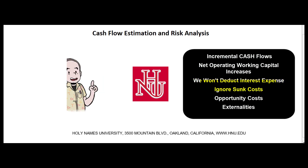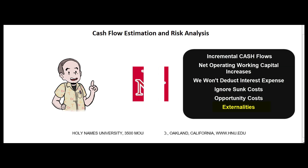We're going to ignore sunk costs — money that's been spent can't be unspent — but we will look for opportunity costs. For example, if we're thinking about building a new type of water heater on a piece of land we already own, we can't sell that land to somebody else. We'll also look for externalities — if we're building a new water heater, some of those sales may be cannibalizing our existing line of water heaters.